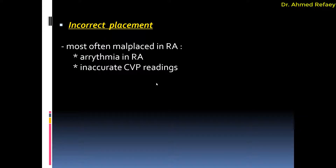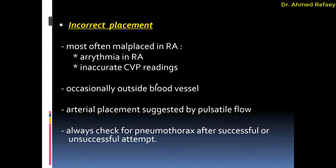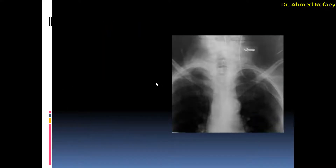Regarding incorrect placement of the central venous catheter: it is most often malpositioned in the right atrium, which can cause arrhythmia as well as inaccurate central venous pressure readings. Occasionally it is inserted outside the blood vessels. You can suspect arterial placement when you have pulsatile flow, in addition to an oblique direction of the catheter not parallel to the spine. This is an example of malpositioning — inserted through the left internal jugular vein, malpositioned in the left subclavian extending to the left axillary vein.